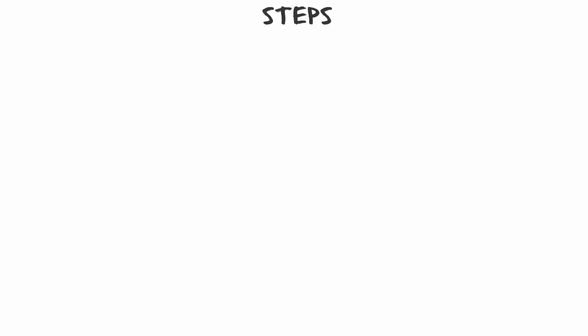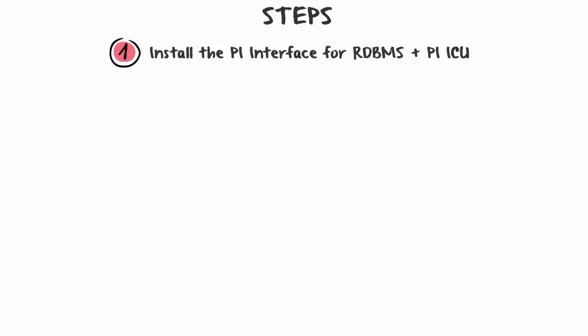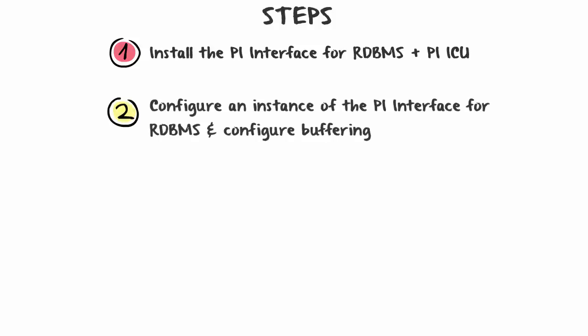Now that you know the basics, what are the steps for setting up a PI Interface for RDBMS? First, you'll want to install the PI Interface for RDBMS and the PI Interface Configuration Utility. We recommend that you install these components on a dedicated computer — not on the PI Data Archive or on the RDBMS server. Then, you'll want to configure and run an instance of the PI Interface and configure buffering.